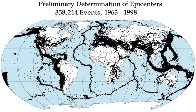Strike-slip faults are steep structures where the two sides of the fault slip horizontally past each other. Transform boundaries are a particular type of strike-slip fault. Many earthquakes are caused by movement on faults that have components of both dip-slip and strike-slip, known as oblique-slip. Reverse faults, particularly those along convergent plate boundaries, are associated with the most powerful earthquakes—megathrust earthquakes—including almost all of those of magnitude 8 or more.